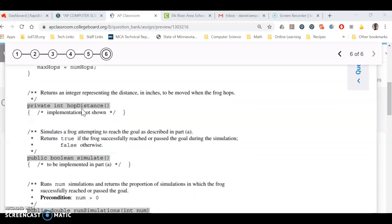The other thing to note here in the code is that there's a method that does some random hop distance that can be both forward or backwards. And so we're going to have to call that method in the simulate here to simulate the frog hopping.